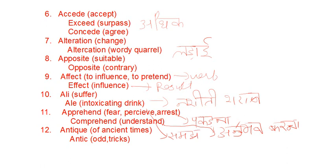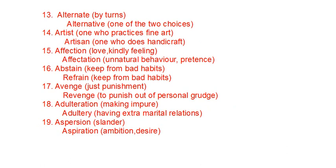Antique refers to ancient times. Antic means odd behavior or tricks. Alternate means by turns. Alternative means one of two choices.